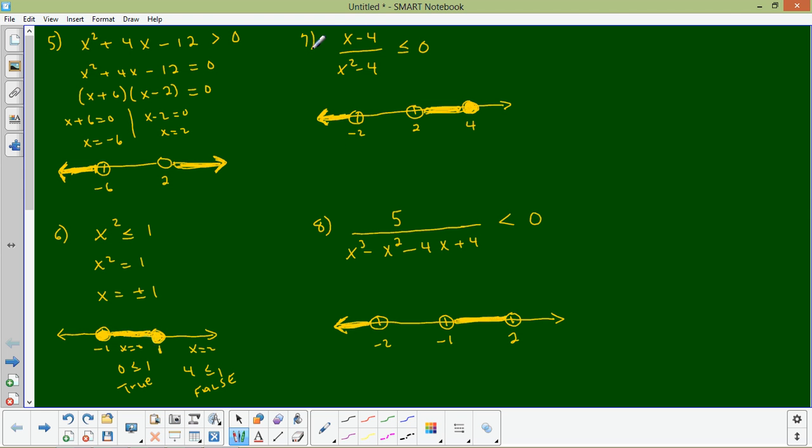Now, number 7, we have a bit of an issue. Because if you set this thing equal to 0, right, like this, then that's fine and good. And the fraction will equal 0 when x minus 4 equals 0. And, of course, that gives you an answer of x equals 4. And, again, because we have equality involved here, the number 4 is shaded in.